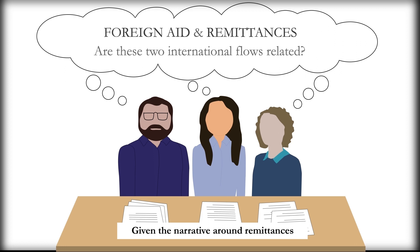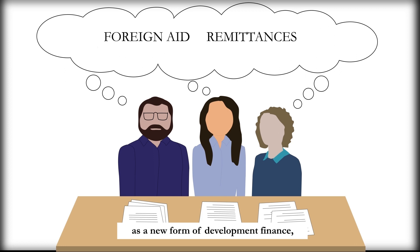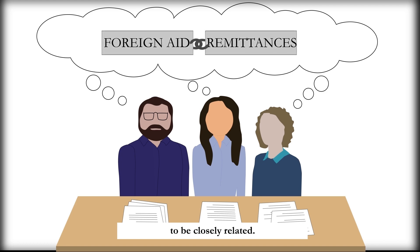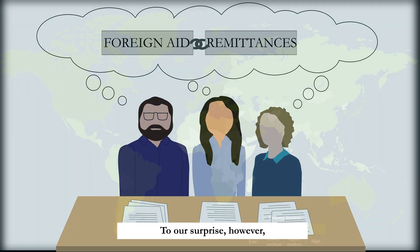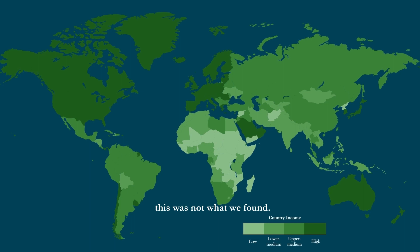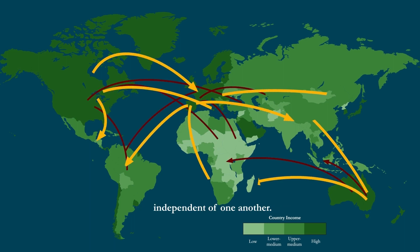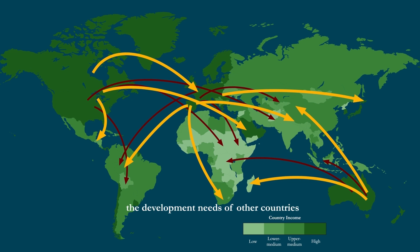Given the narrative around remittances as a new form of development finance, we would expect these two flows to be closely related. To our surprise, however, this was not what we found. Rather, these resources seem to move independent of one another, and in fact, it doesn't look like the development needs of other countries is what is driving remittances.